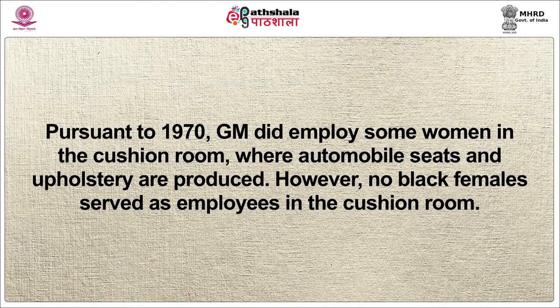Before 1970, General Motors employed only one Black female, who served as the janitor. General Motors conceded that until the 1st of May 1970, it excluded all women from assembly line work at the plant, except in areas where the women could always be sent home after a nine-hour shift without disrupting production when it worked longer hours. Pursuant to 1970, General Motors did employ some women in the cushion room, where automobile seats and upholstery are produced. However, no Black women served as employees in the cushion room.